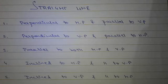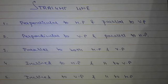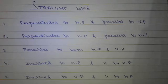There are mainly six conditions for a straight line. First, perpendicular to HP and parallel to VP. Second, perpendicular to VP and parallel to HP. Third, parallel to both HP and VP. Fourth, inclined to HP and parallel to VP. Fifth, inclined to VP and parallel to HP. And sixth, line contained by one or both the planes, meaning the line is lying on HP or VP.